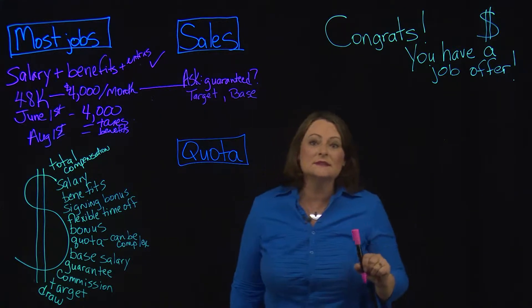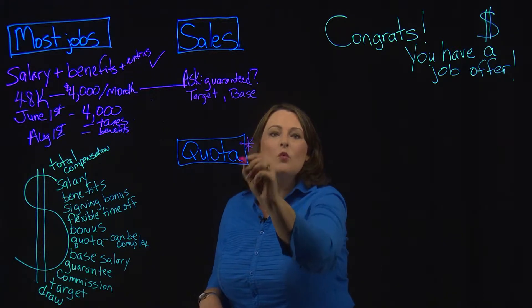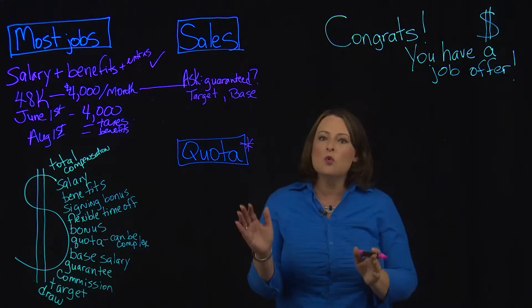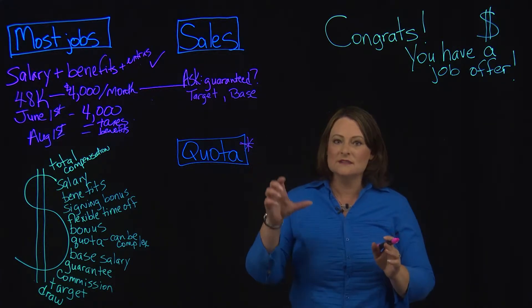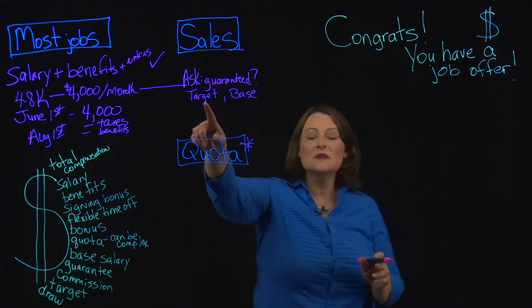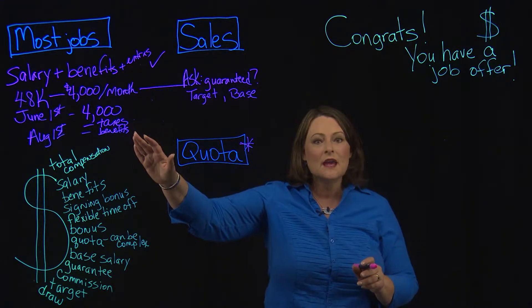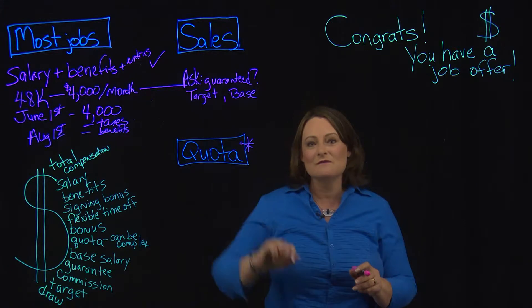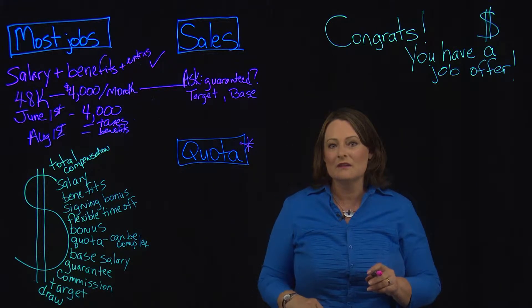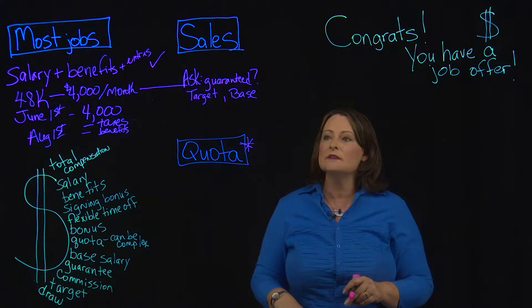So let me explain what happens in sales. A lot of times you are going to be carrying what's called a quota. So a quota means how much you need to sell to actually even meet something like a target salary. So if you had a target and you didn't make your quota, you would not be making $48,000 a year. That's a simple explanation. I'm going to kind of go into it in more detail next.